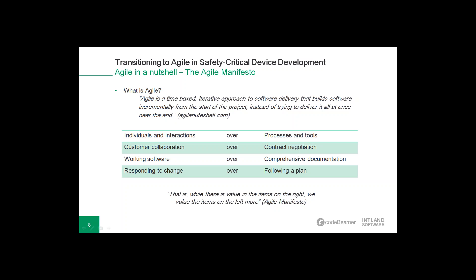Agile is a time-boxed, iterative approach to software delivery that builds software incrementally from the start of the project instead of trying to deliver it all at once near the end. The Agile approach is being applied more and more to product development. It works by breaking projects into small bits of user functionality called user stories, prioritizing them, and then continuously delivering them in short two-week cycles called iterations. The Agile Manifesto was created by a group of experienced people who wanted to create a better method to develop software.